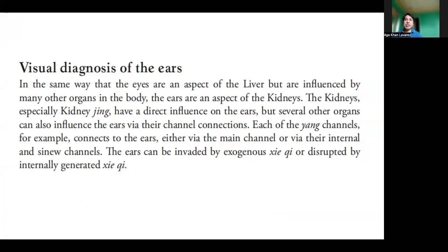In the same way that the eyes are an aspect of the liver but are influenced by many other organs in the body, the ears are an aspect of the kidneys. The kidneys, especially kidney Jing, have a direct influence on the ear. But several other organs can also influence the ears via their channel connection. Each of the Yang channels, for example, connects to the ear, either via the main channel or via their internal and sinew channel. The ears can be invaded by exogenous Qi or disrupted by internally generated Qi.